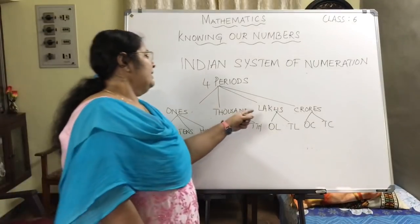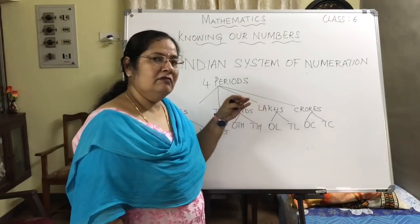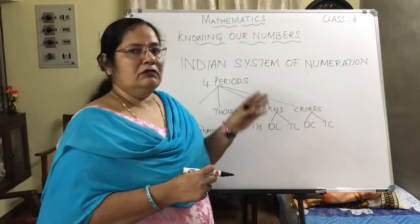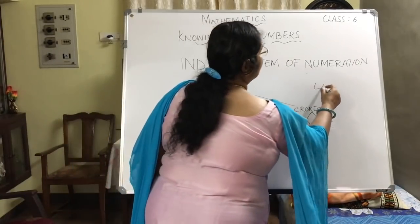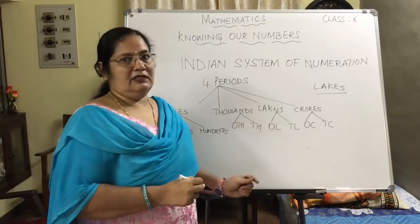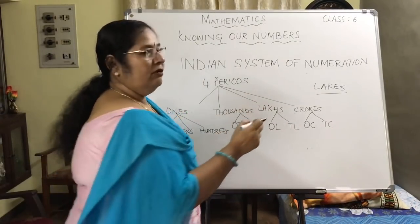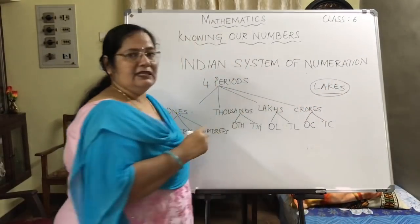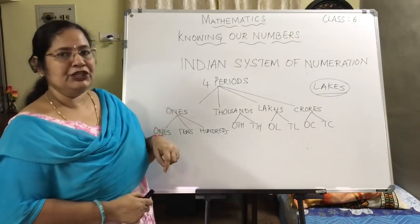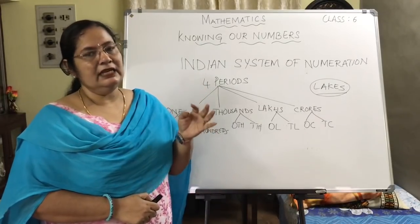Now one thing I would like to remind you — most of you are likely to make a mistake when you write the word 'lakhs.' Over the years I have found most children write it as 'lakes.' Please don't write it as 'lakes' — it is L-A-K-H-S, lakhs. So we have seen the Indian system of numeration divided into four periods: ones, thousands, lakhs, and crores.